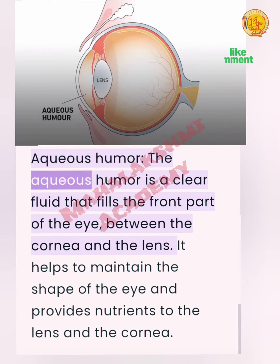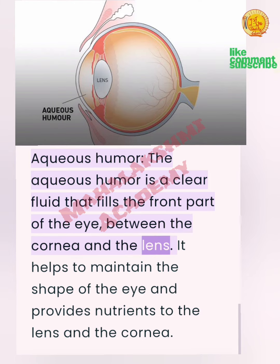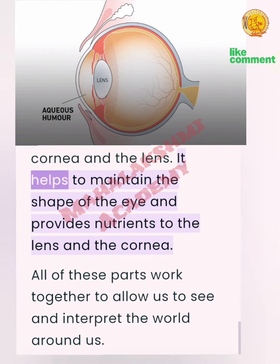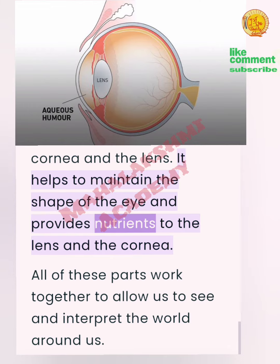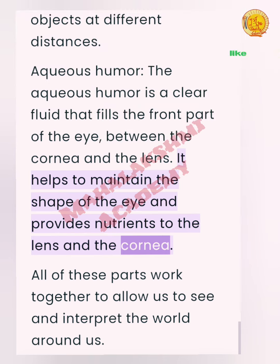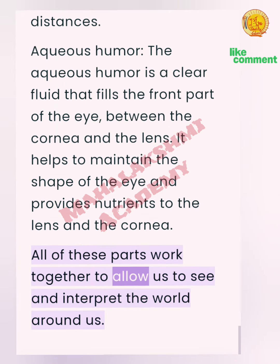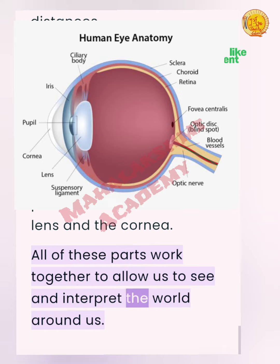Aqueous humor: The aqueous humor is a clear fluid that fills the front part of the eye between the cornea and the lens. It helps to maintain the shape of the eye and provides nutrients to the lens and the cornea. All of these parts work together to allow us to see and interpret the world around us.